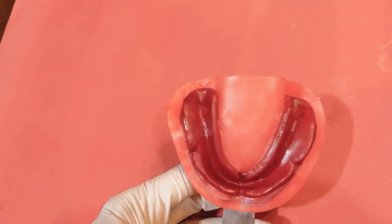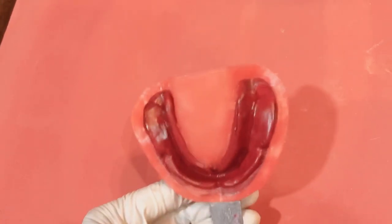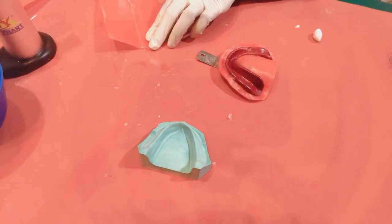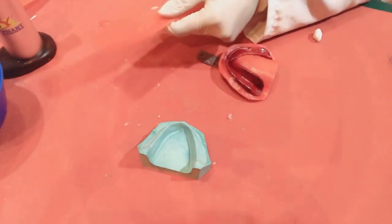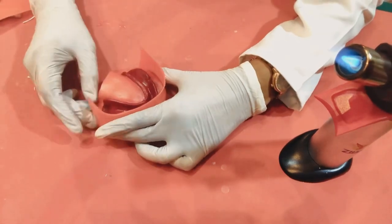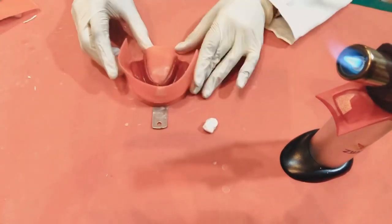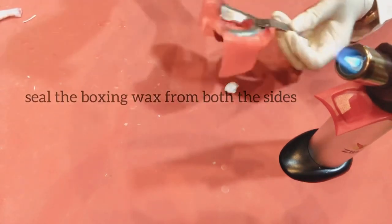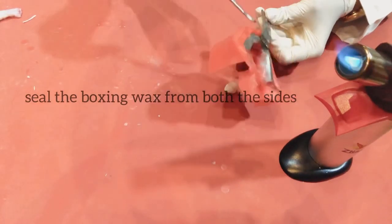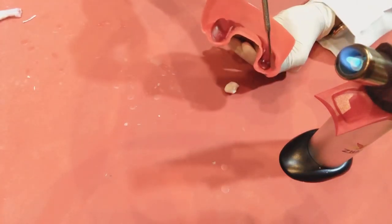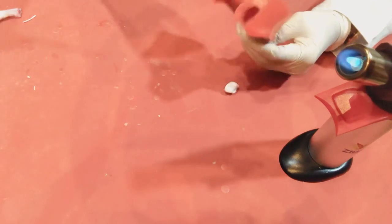Make sure it's of uniform width two millimeters below the margins, following the outline of the impression, removing any excess, and when it's good enough we can proceed with boxing. Here I'm not using boxing wax as shown in the video of maxillary impression. I'm using the same modeling wax sheet for boxing too. Seal the boxing wax sheet to the beading wax.